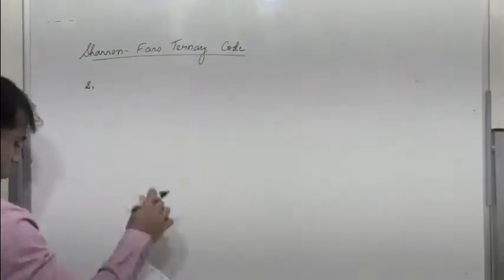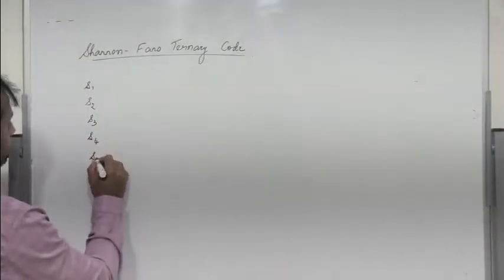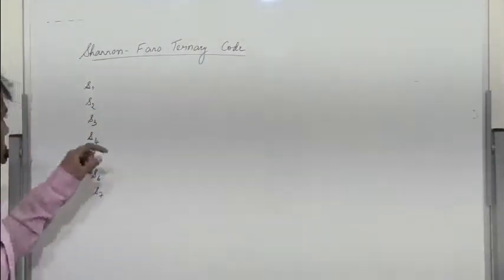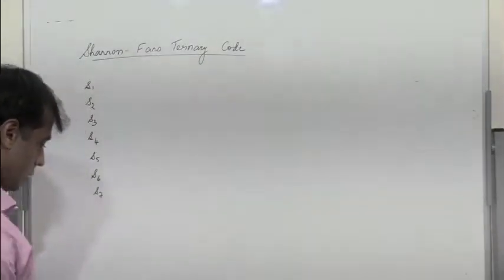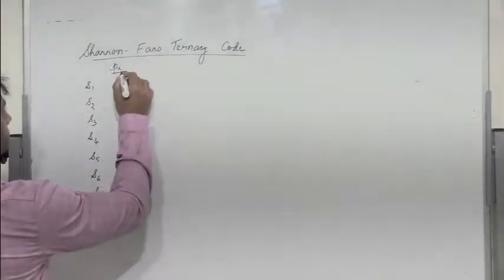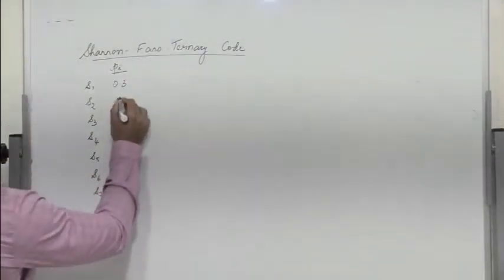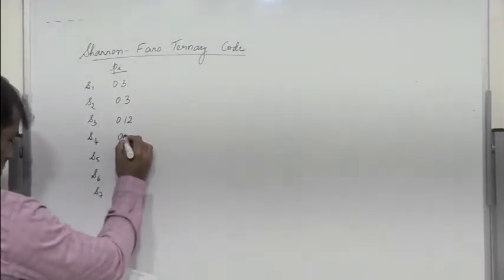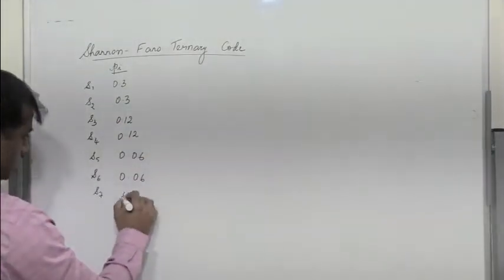Let us consider the symbols. There are seven symbols: S1, S2, S3, S4, S5, S6, and S7. The first step is to arrange all the symbols in decreasing order of their probabilities. So their probabilities in decreasing order are: S1 = 0.3, S2 = 0.3, S3 = 0.12, S4 = 0.12, S5 = 0.06, S6 = 0.06, and S7 = 0.04.